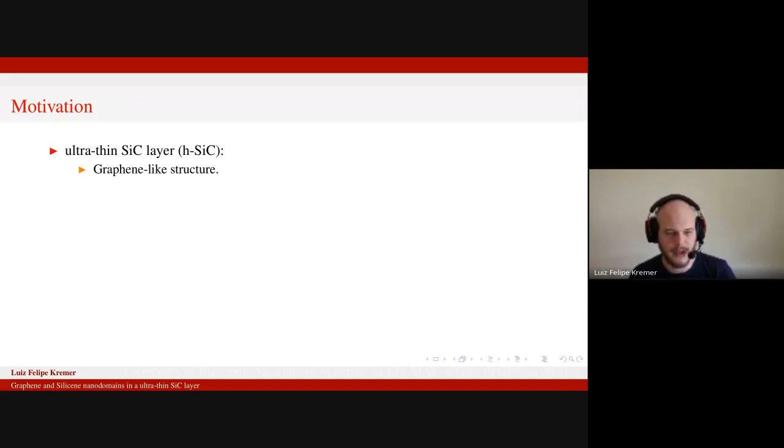So an ultrathin silicon carbide layer, that's H-SiC, I will call it, it's a graphene-like structure. So it's an atomic layer of silicon carbide arranged in a hexagonal lattice. It's energetically stable.